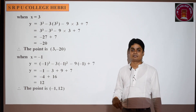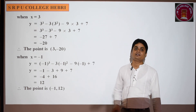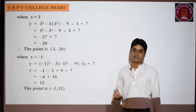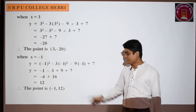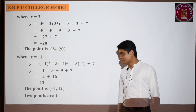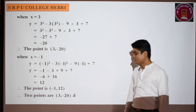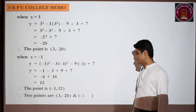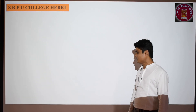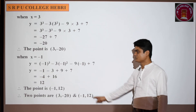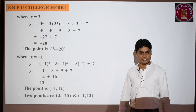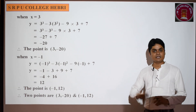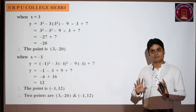At these two points the tangent is parallel to the x-axis for the given curve. So the final answer is (3, -20) and (-1, 12). I hope you understood. The remaining problems will be continued in the next class. Thank you.